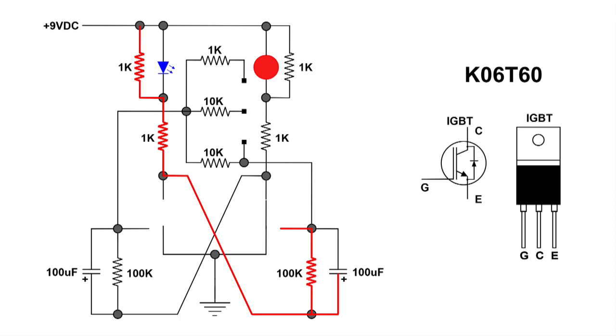Now the right 100 microfarad capacitor is charging, and here is its charge path. It goes up through the 10K ohm resistor, over and down through the 100K ohm resistor on the left side, up and around, and then down to ground. And when it charges up negative enough, it turns off the right side, the right IGBT.